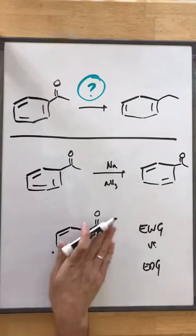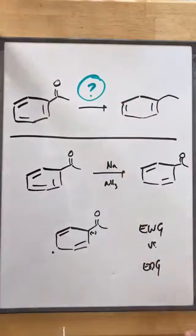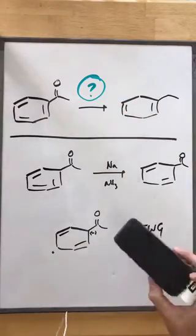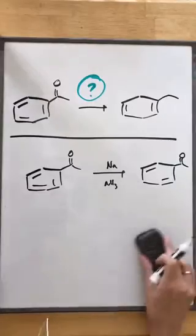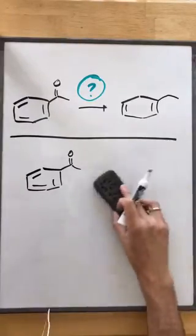Okay, so we can see in this case that we can't do our dissolving metal reduction first because then we run into this problem. So that means that we have to do our reduction first, and there's a lot of different ones you can do.